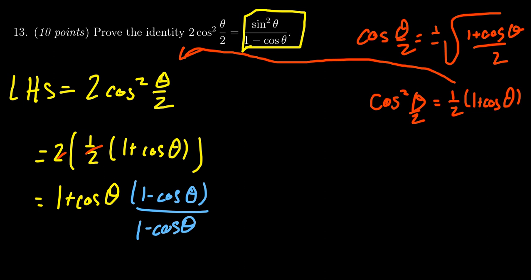If we FOIL the numerator, we get 1 - cos²θ. More specifically: 1 × 1 = 1, then 1 × (-cosθ) and cosθ × 1 cancel out, leaving -cos²θ. This sits above 1 - cosθ, which is the denominator we're looking for. That's a good sign.